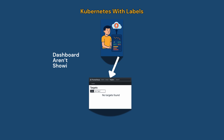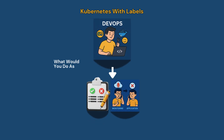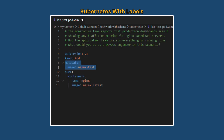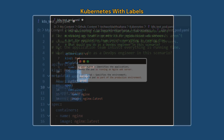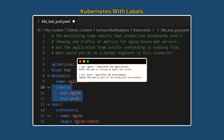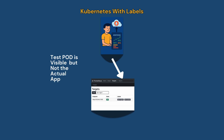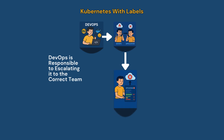The monitoring team reports that production dashboards aren't showing any traffic or metrics for nginx-based web servers, but the application team insists everything is running fine. What would you do? First, deploy a simple test pod that behaves like a production nginx service. Get the default pod YAML and under the metadata section add two labels: 'application: nginx' and 'environment: production'. Then apply and run the pod using the kubectl apply command. If the pod shows up in Prometheus and still no metrics appear for your original application, then it's time to escalate to the application team.